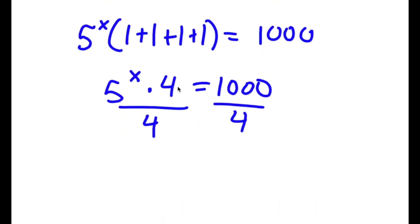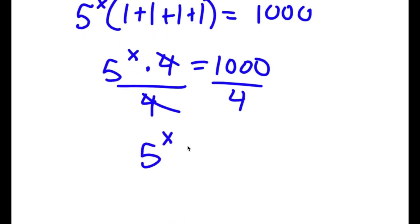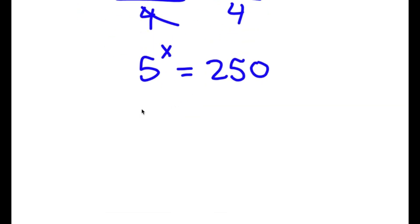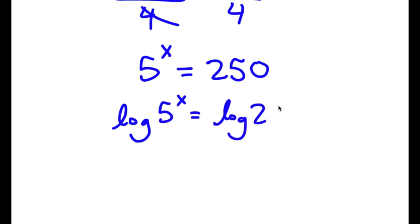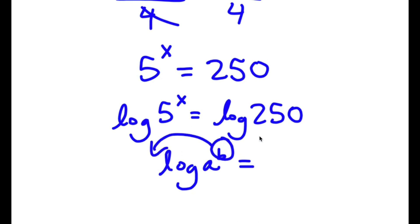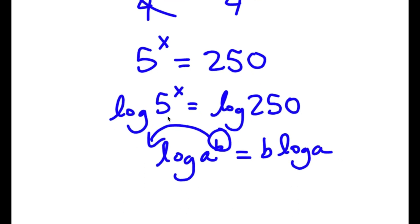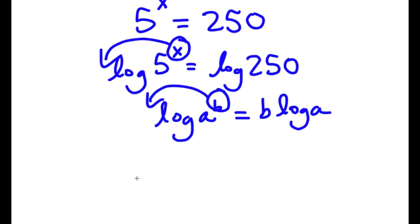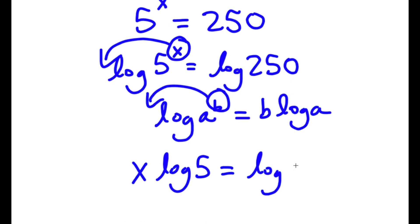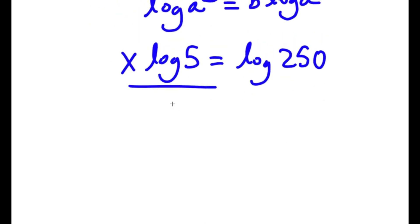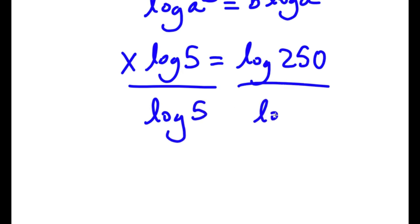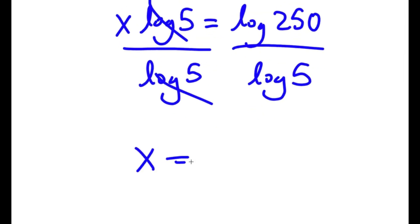Now if I divide both sides by 4, these two cancel out and I get 5 to the power of x is equal to 250. Now I'm going to take the log on both sides. So I have log of 5 to the power of x is equal to log 250. Using the rule log a to the power of b equals b times log a, I can move x to the front. So now I have x times log 5 is equal to log of 250. Dividing both sides by log 5 gives x is equal to log of 250 over log of 5.